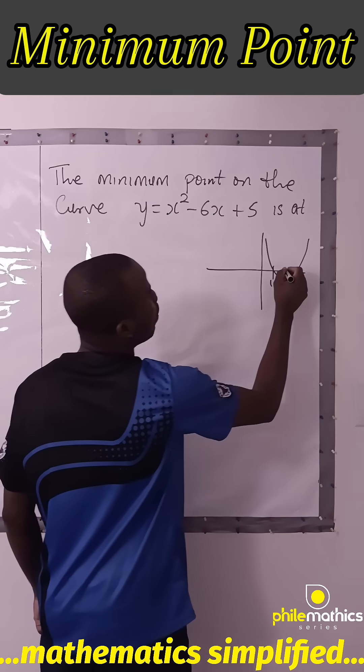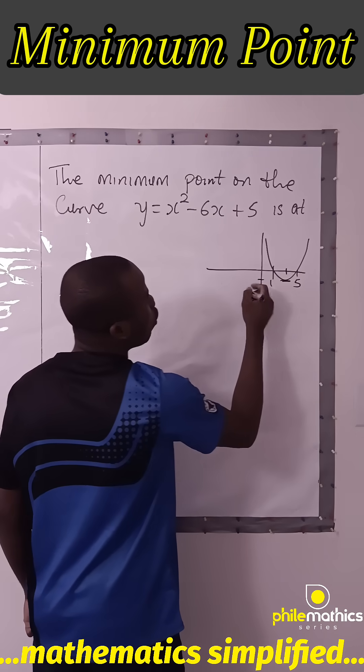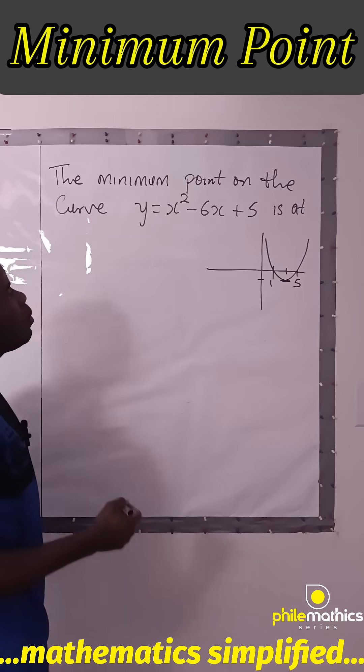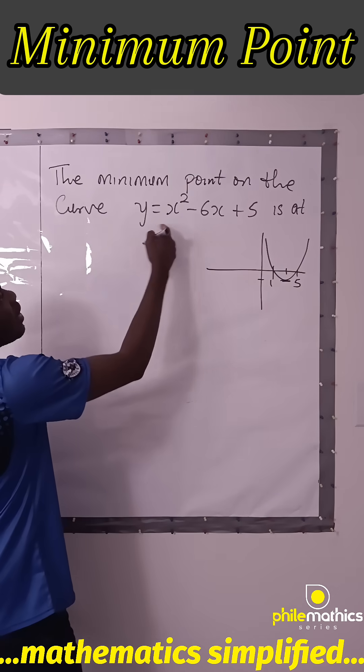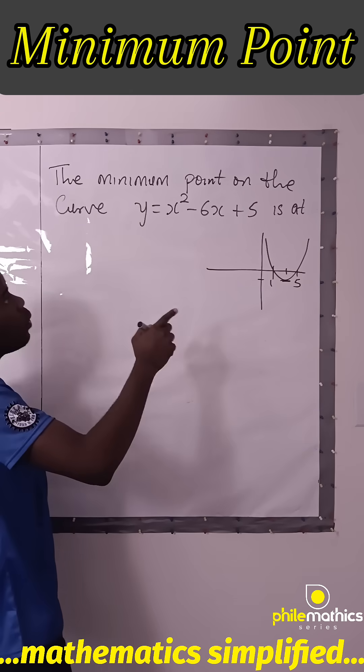So we're looking for the value of x and the value of the corresponding y. And for us to find the minimum point, we first of all find the critical point. At the critical point, the derivative is zero.